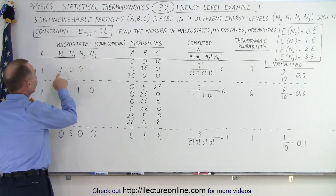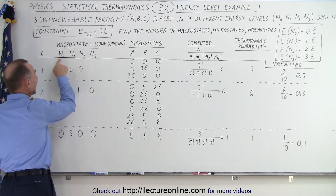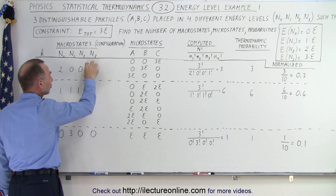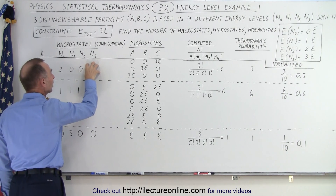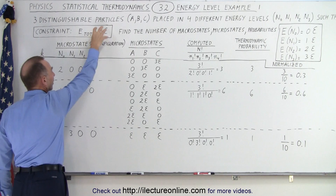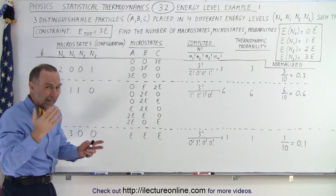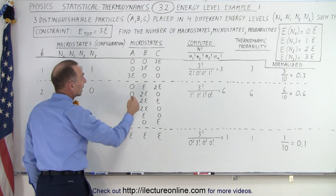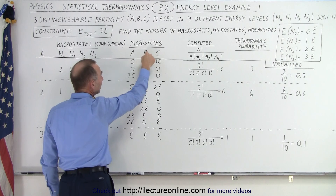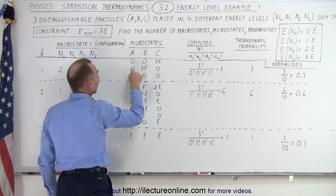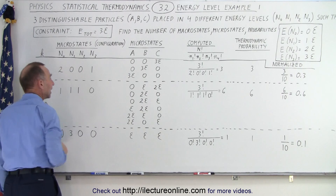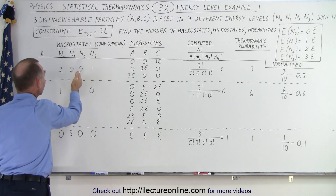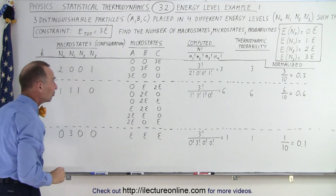We could, for example, have two of the three particles in the N0 energy level, where there's no energy, and one particle in the N3 energy level, where there's three quantum energies, which then equals the total we're required to have. What are the different ways in which the electrons can be arranged in that configuration? It turns out there are three: we can have C in that energy level, we can have B in that energy level, or we can have A in that energy level, with the other two in the zero energy level. So there are three different microstates in this one macrostate.